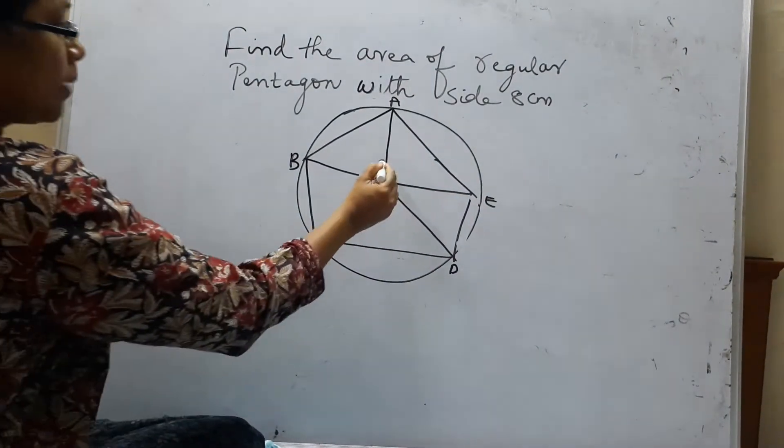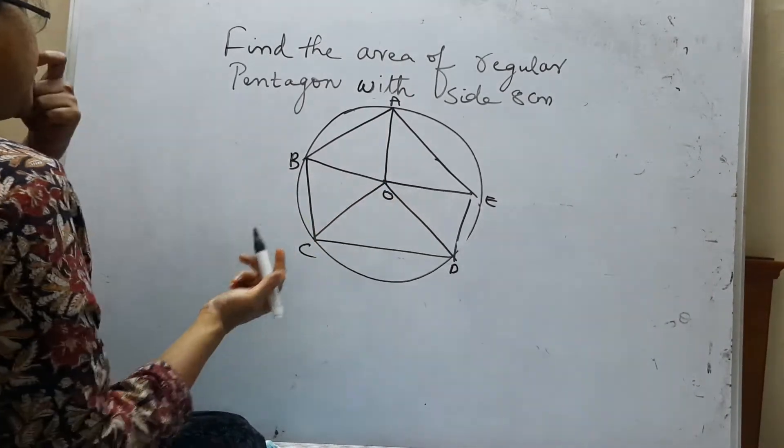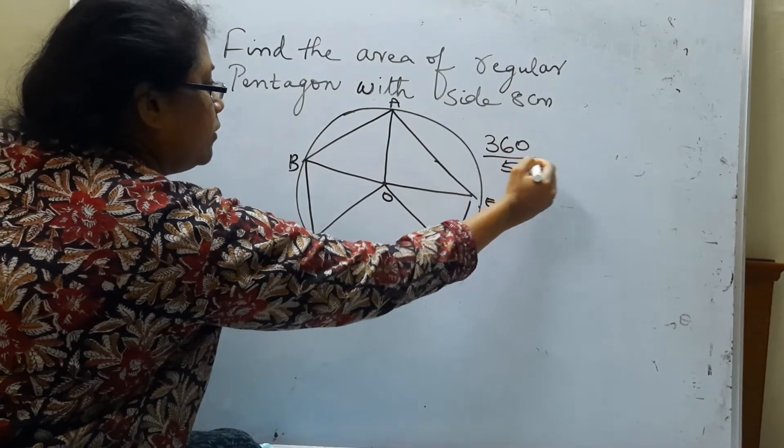Now what am I going to do? We know that the complete angle is 360 degrees. Now we have 5 parts. So every part is 360 divided by 5, that is 72.